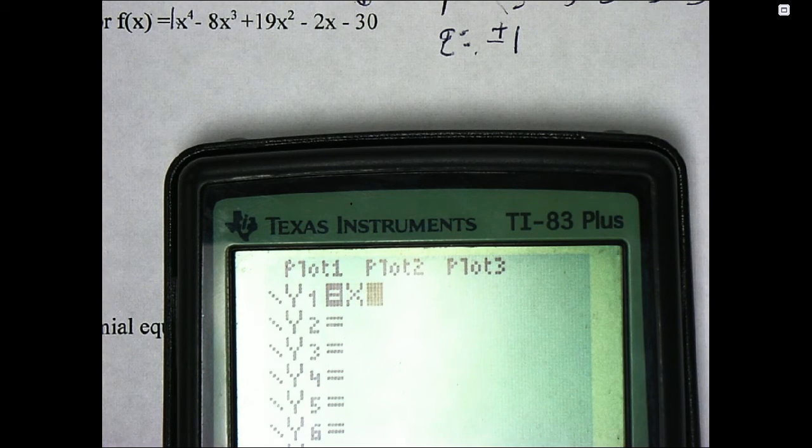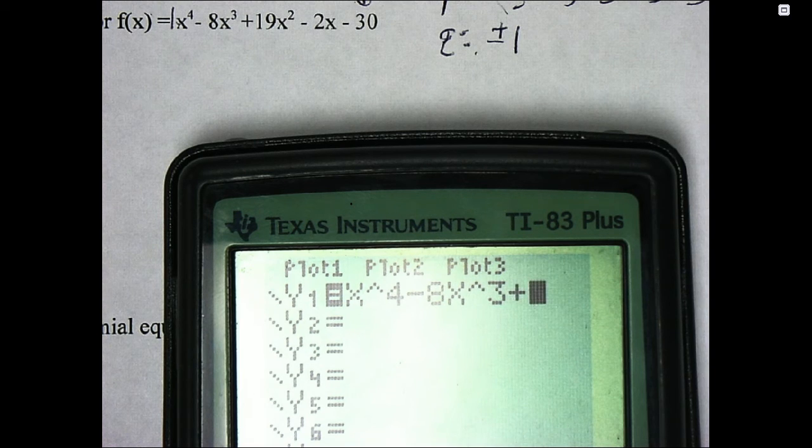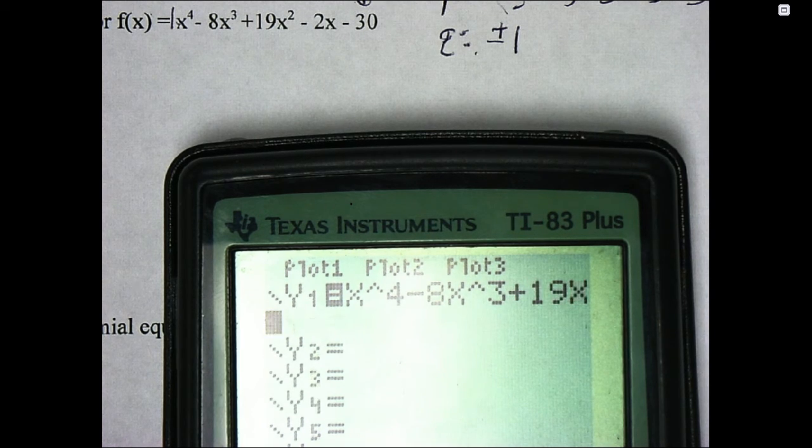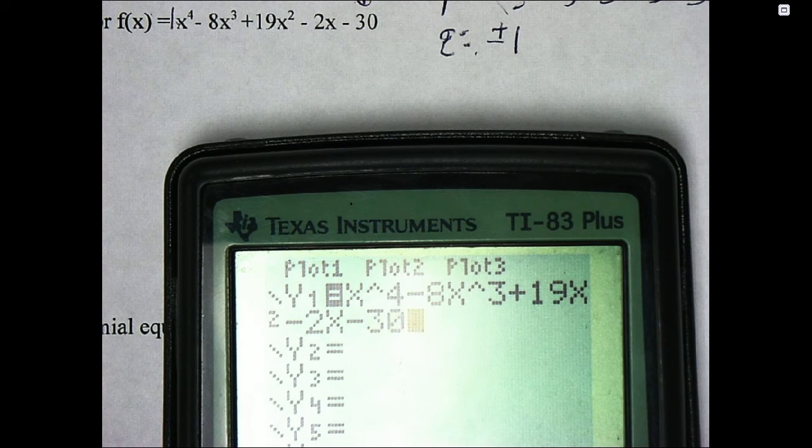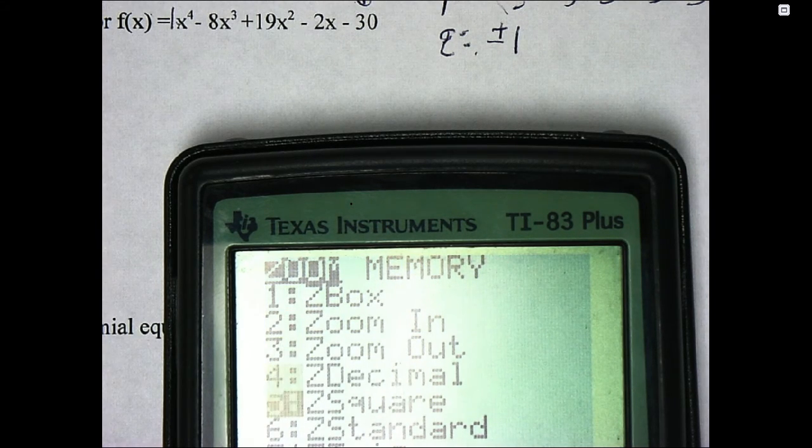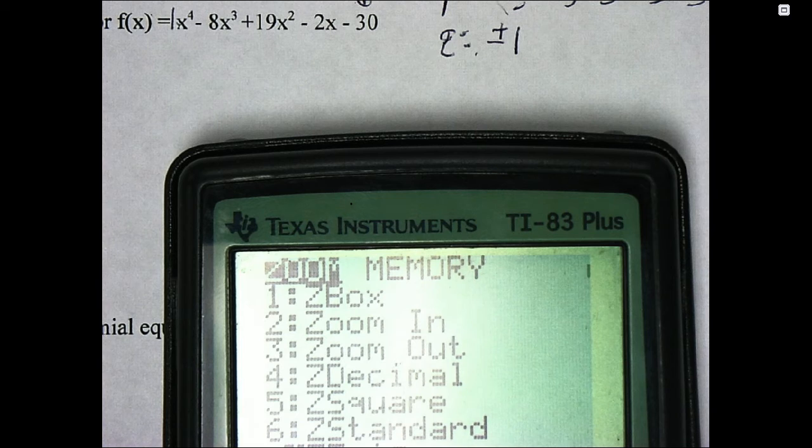Enter in x to the 4th minus 8x to the 3rd plus 19x squared minus 2x minus 30. And I'll just start with a zoom standard. Maybe you have to adjust that as we go.